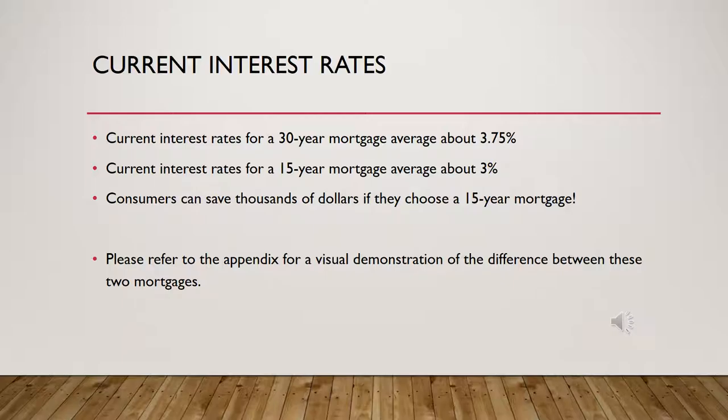Here I listed current interest rates for a 30-year mortgage. The average is at about 3.75%, whereas a 15-year mortgage is at about 3%. Consumers can save thousands of dollars if they choose a 15-year mortgage. I've included at the end in the appendix a visual graph to better show how this works.